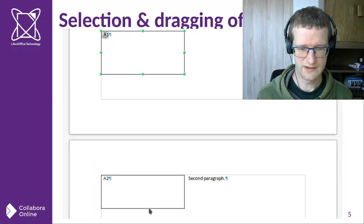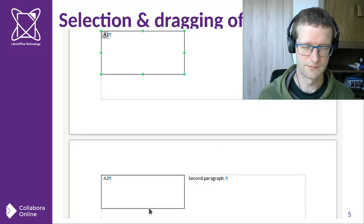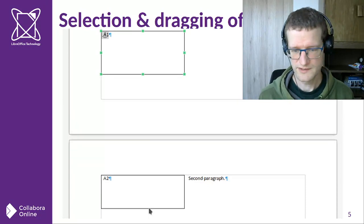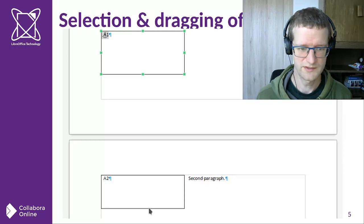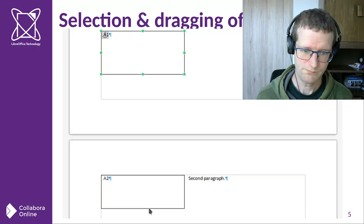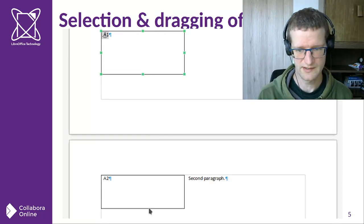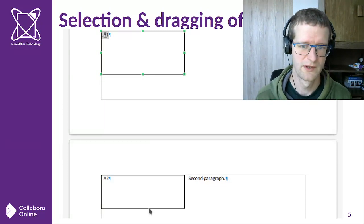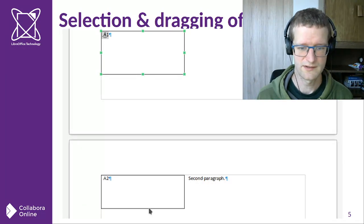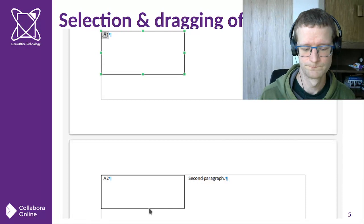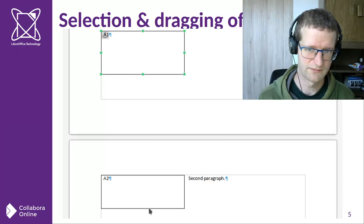You can click on these frames and get selection handles, but only the first page position is controlled by the user — later frames are calculated by the layout. For horizontal position we copy the positioning attributes; for vertical position we start from the top of the page. It doesn't make sense to allow dragging a follow frame, so we always drag the master frame on the first page. Otherwise it would look like you can drag, but the frame would jump back to the top on release. We now have explicit code to ensure that when dragging a multi-page table, we always drag the first-page frame.